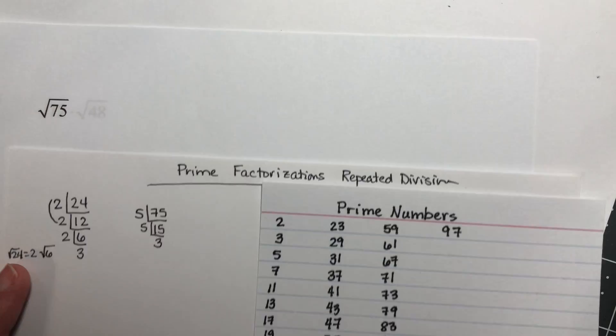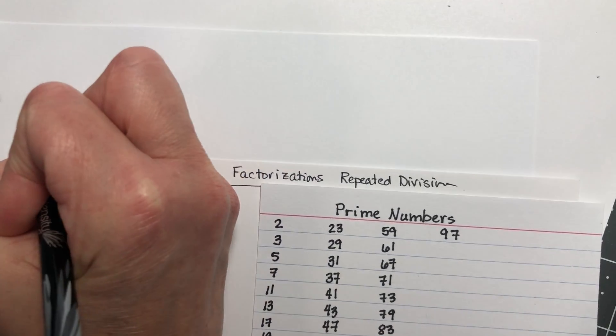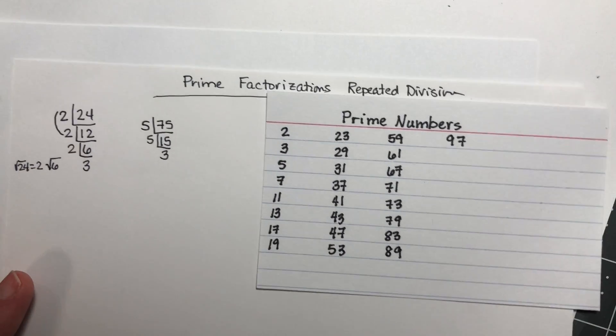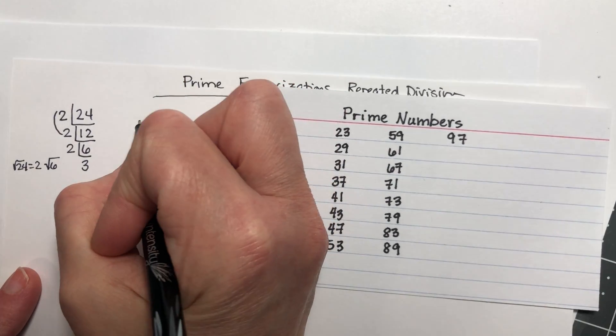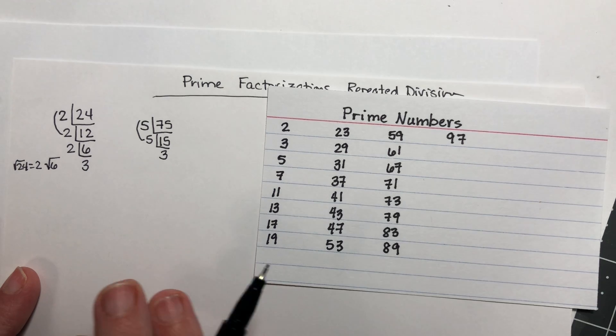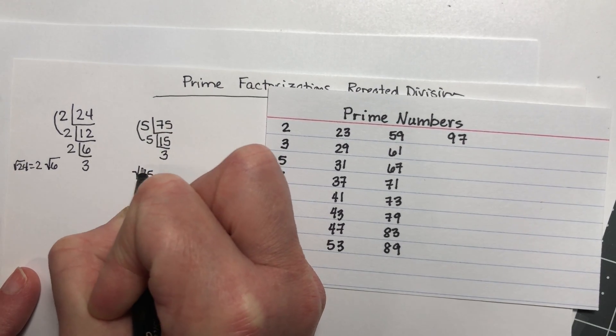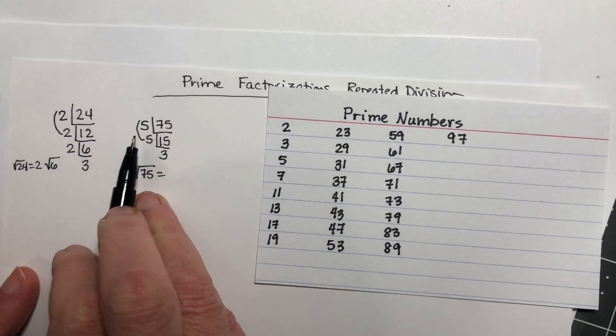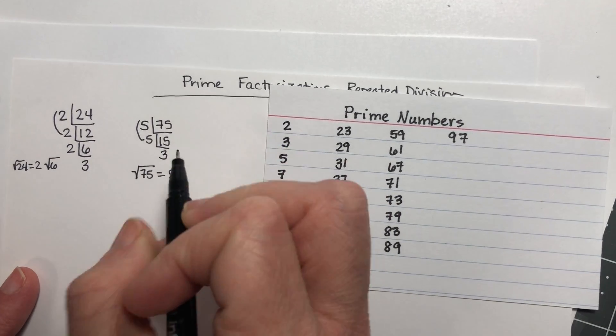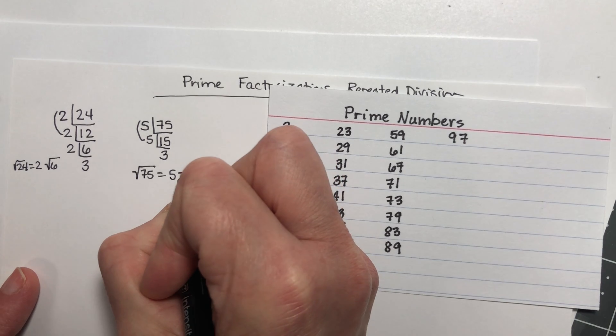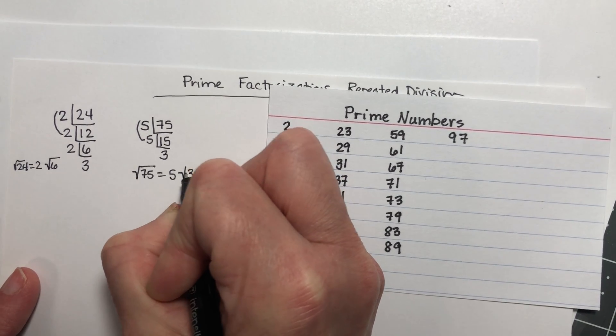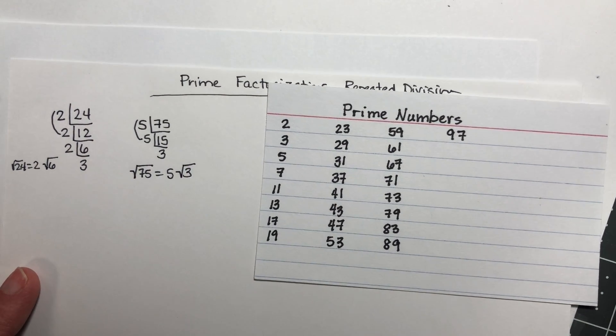I'm looking for a square root, which means my index is 2. That means I'm looking for pairs. I have a pair of 5s and I have a 3 without a pair. So this tells me the square root of 75 is going to be a 5 comes on the outside. The 3 doesn't have a pair, so it is stuck on the inside. So I should get 5 times the square root of 3.